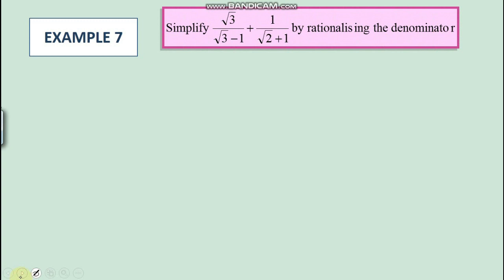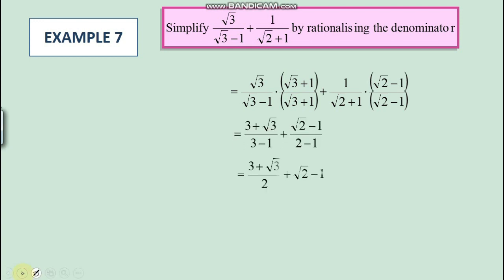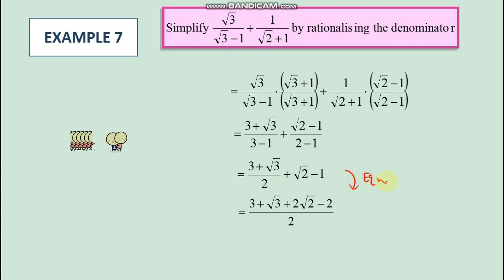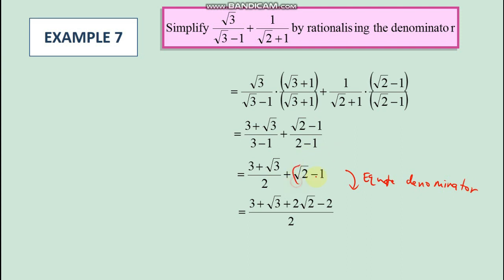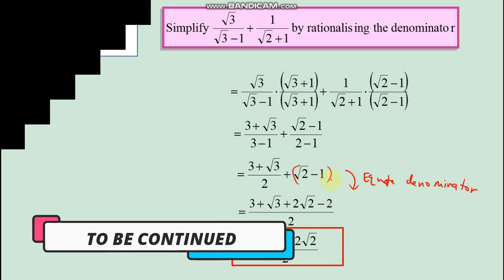For example 7, we need to separately rationalize each term first using their own conjugates, then simplify further. After equating the denominators — multiplying by 2 over 2 — we get 2 minus 2 times that term, and the simplest final form is as shown. You can also leave your answer in the alternative form; that's okay as well.